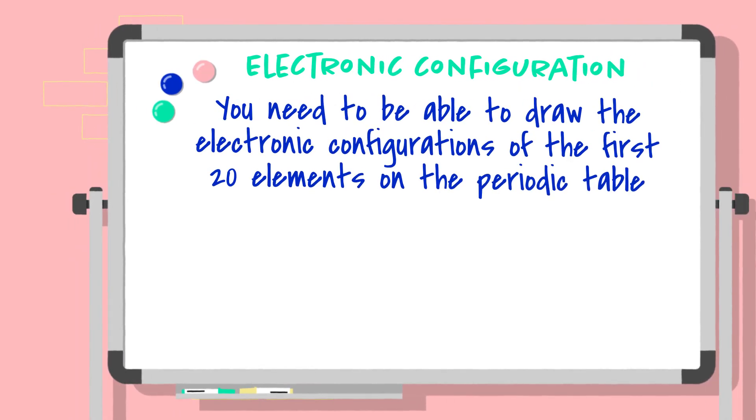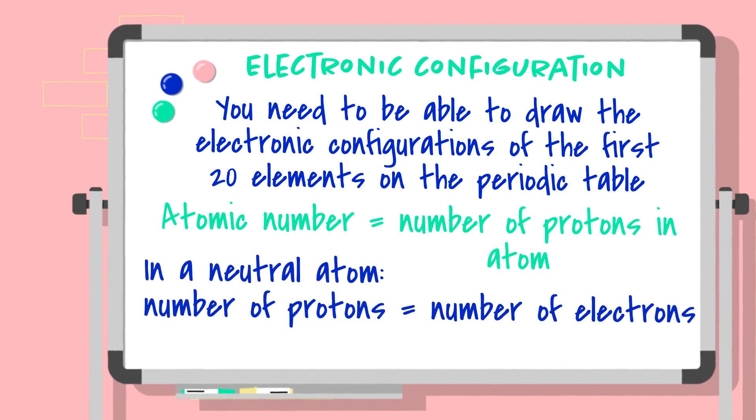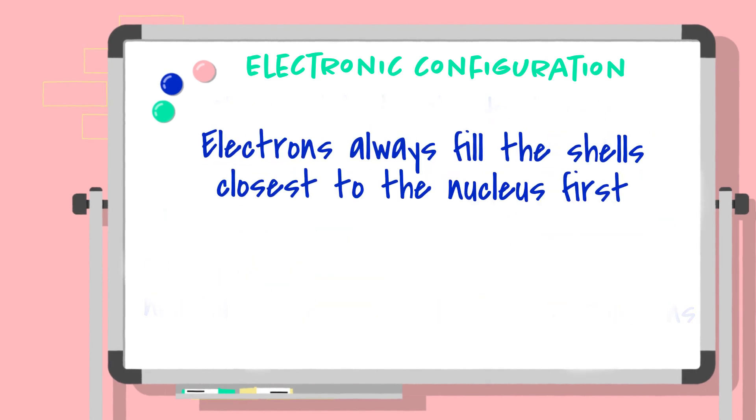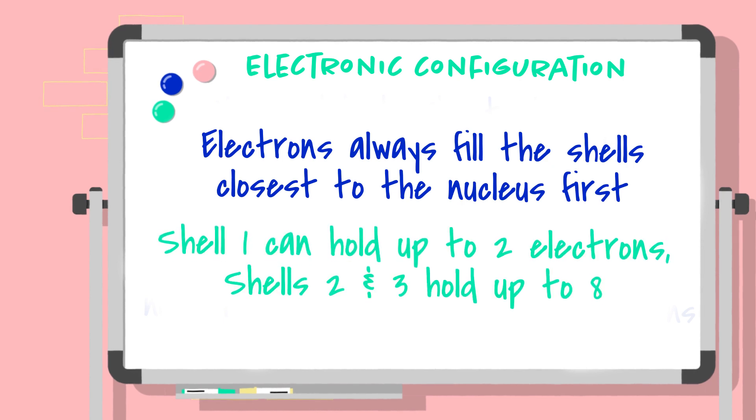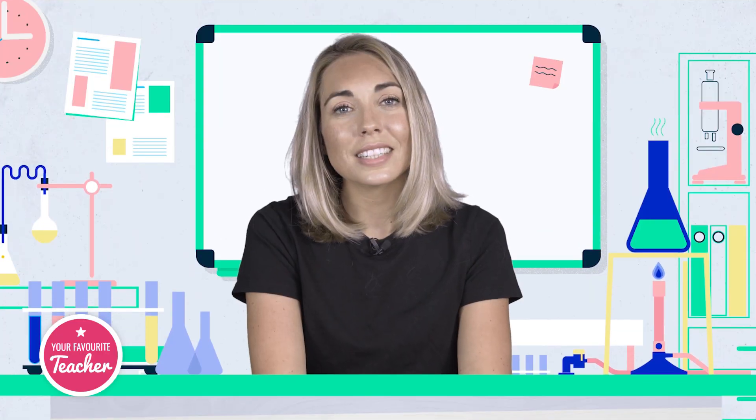Let's summarise. You're going to need to be able to draw electronic configurations of the first 20 elements on the periodic table. The atomic number is going to tell you the number of protons in each atom and if it's neutral, the same number is going to be for the electrons. Electrons always fill shells closest to the nucleus first, the first shell holds two, the second and third shell can hold up to eight. I'm Miss Meeks and we've been looking at electronic configuration with your favourite teacher.